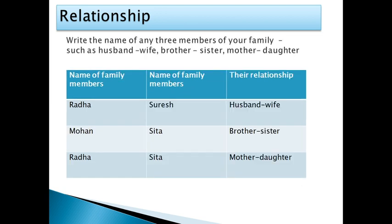Members of the family also have relationships among themselves, like husband, wife, brother, sister, mother, daughter. For example, Radha and Suresh have the relationship of husband and wife. Mohan and Sita have the relationship of brother and sister. Radha and Sita have the relationship of mother and daughter. So family members have relationships among themselves.